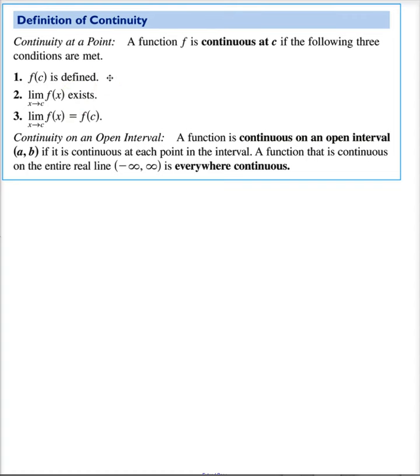First, f(c) is defined. This is different from what we were doing before with limits, and this is one of the key differences between continuity and limits. Second, the limit has to exist. And third, the limit as x approaches c of f(x) has to equal the functional value evaluated at c.